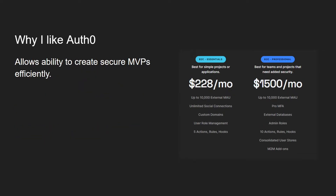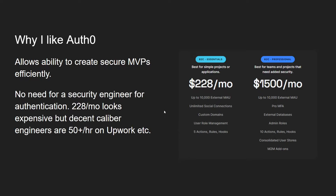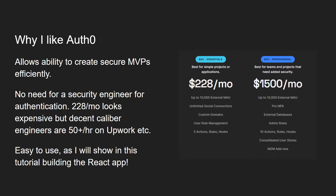So why do I like Auth0? It allows you to create secure MVPs efficiently — minimum viable products. You don't have to create a whole authentication system; it's all built for you. It allows you to build secure web applications that can scale without rebuilding your auth system when your website blows up. There's also no need for a security engineer for authentication. $228 a month looks expensive, but decent caliber engineers on Upwork are $50 an hour plus. Auth0 is easy to use, and I'll show you that throughout building this React app.